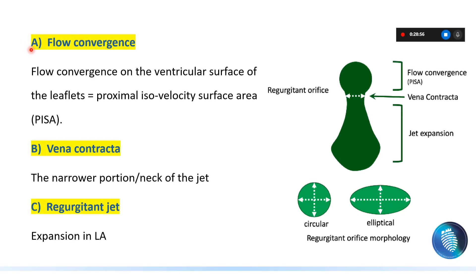We will talk about the different components of the color jet we get during our assessment of mitral regurgitation. First, the flow tends to converge in a pattern called the flow convergence zone, also known as PISA — proximal iso-velocity surface area. This is the PISA or flow convergence zone, then the jet will pass through the regurgitant orifice.